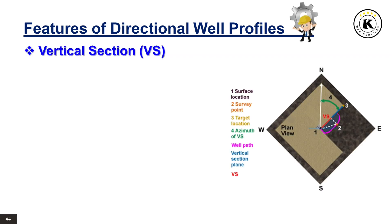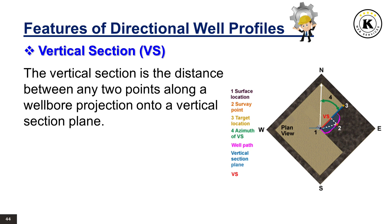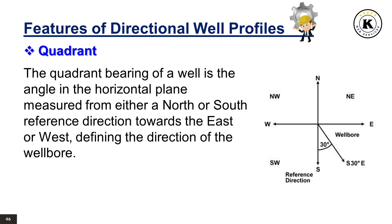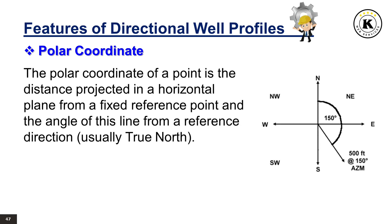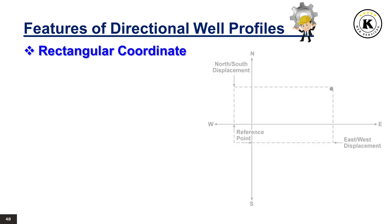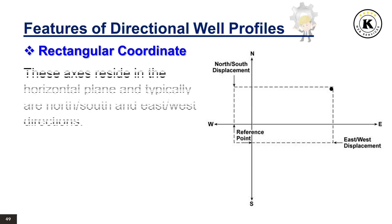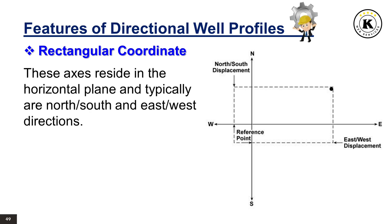Vertical Section: The vertical section is the distance between any two points along a wellbore projected onto a vertical section plane. Azimuth: The azimuth is the angle in the horizontal plane measured from a fixed reference direction, such as true north, usually measured clockwise. Quadrant: The quadrant bearing of a well is the angle in the horizontal plane measured from either a north or south reference direction towards the east or west, defining the direction of the wellbore. Polar Coordinate: The polar coordinate of a point is the distance projected in a horizontal plane from a fixed reference point and the angle of this line from a reference direction, usually true north. Rectangular Coordinate: The rectangular coordinates of a point are defined as the projected distance along two reference axes which are at right angles, with the distance measured from the intersection of the axes. These axes reside in the horizontal plane and typically are north/south and east/west directions.